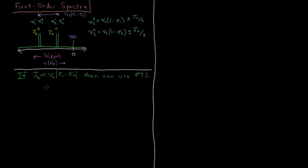In the previous video we used first-order perturbation theory to derive this result for these peaks. So under what conditions is first-order perturbation theory valid? Perturbation theory breaks down when your system is more than just a tiny perturbation away from some reference system — then you might have to use second-order perturbation theory or a variational method. The condition is that J12 must be much, much less than nu0 times the difference between the shielding constants, sigma1 minus sigma2. If that's true, then we can use first-order perturbation theory and it will be pretty accurate.